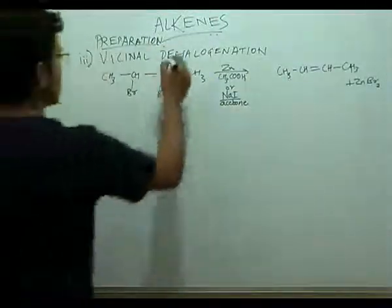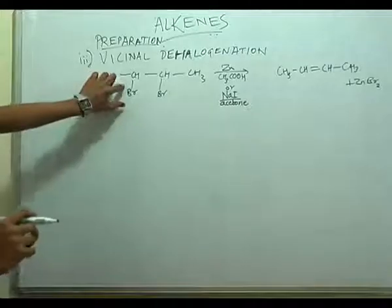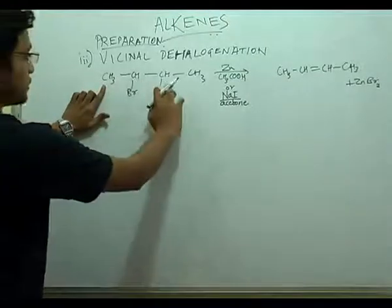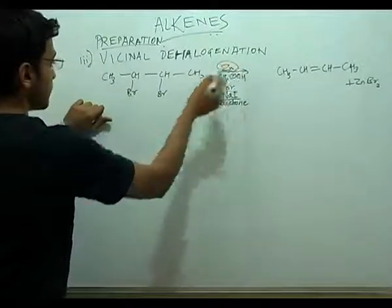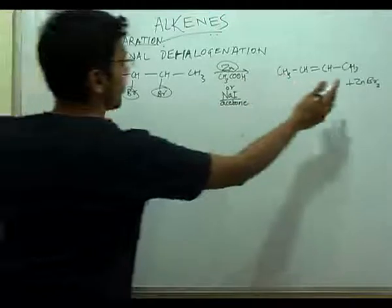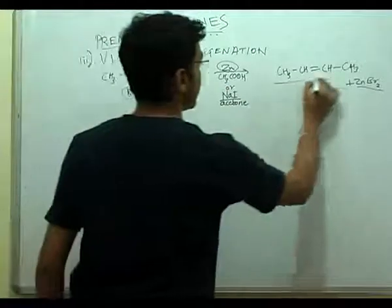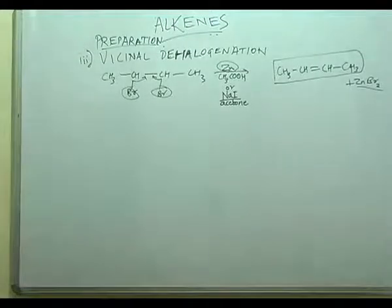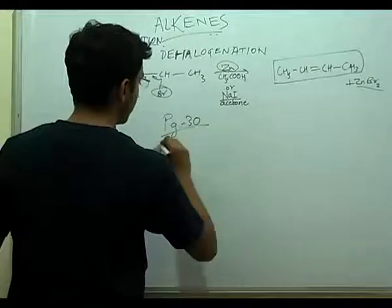The third method is vicinal dehalogenation: removing halogens from the compound to obtain the alkene. For example, CH3–CHBr–CHBr–CH3. This can be done in the presence of zinc or NaI. Zinc directly takes up two bromine atoms to form ZnBr2 as a side product, and a double bond forms giving the alkene. It can also be done with NaI and acetone or zinc dust. The mechanism is well described on page 30 of the book.